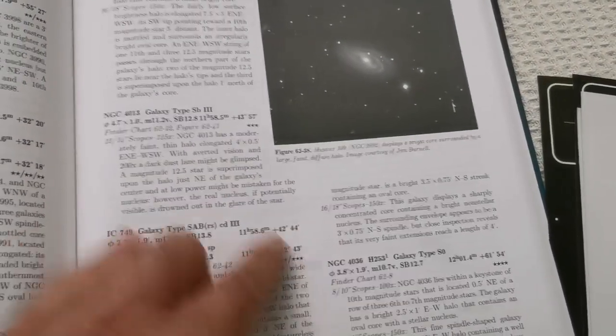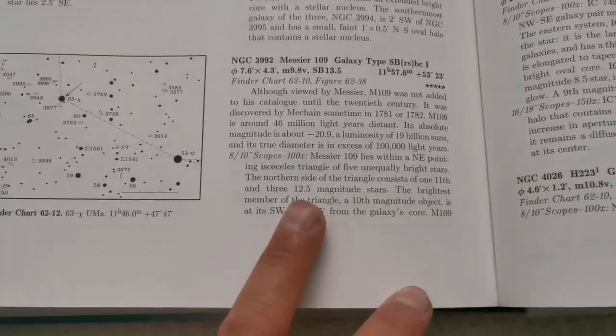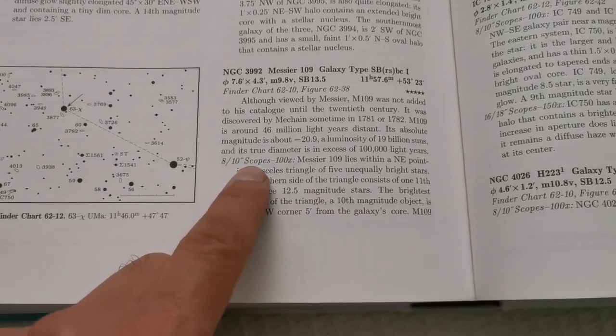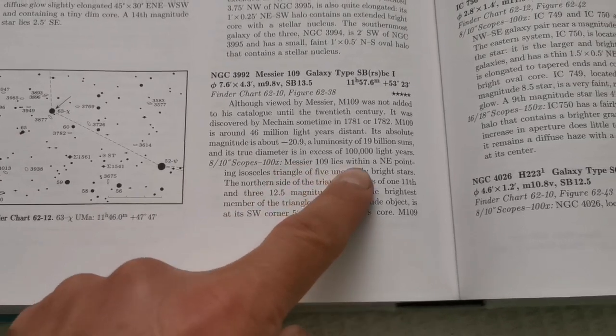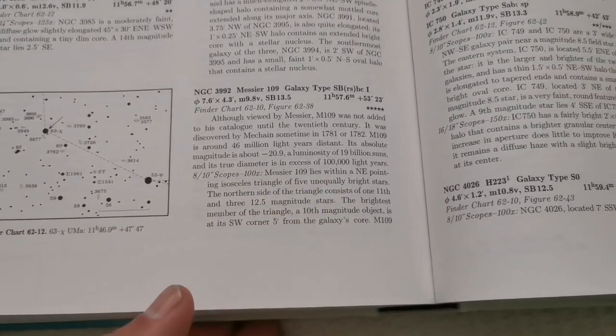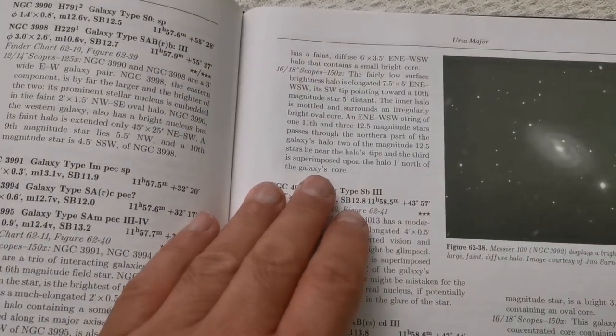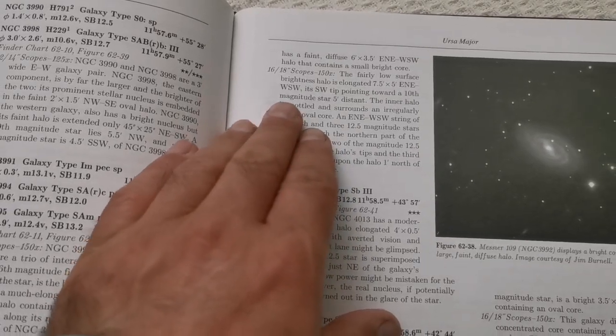You can see a photograph of M109, which is NGC 3992, and a good description of how it will look in different size telescopes. In 8 to 10 inch scopes at 100 magnification, this is how it will look. The triangle is mentioned here. I first observed it, then I'm seeing it in this book.